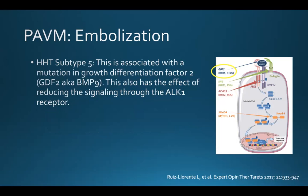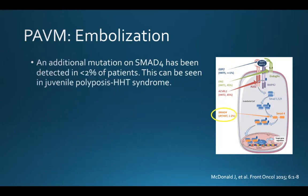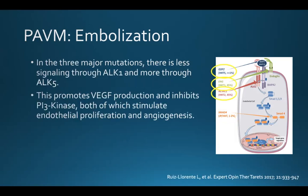There are subtypes 3 and 4, but the genetic mutations are not yet as well described. There is an additional mutation described on SMAD4, one of the protein complexes within the cell, detected in less than 2% of patients, and this can be seen in juvenile polyposis and HHT syndrome. In the three major mutations, there is less signaling through ALK1 and more through ALK5, which promotes VEGF production and inhibits PI3 kinase, both stimulating endothelial proliferation and angiogenesis.